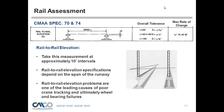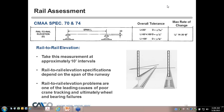Once you have the reference rail established, you then do the rail-to-rail evaluation, taking measurements at approximately every 10-foot interval. The rail-to-rail tolerance depends on the span: for spans less than 50 feet, plus or minus 3/16 inch; greater than 50 but less than 100 feet, plus or minus 1/4 inch; and greater than 100 feet, plus or minus 3/8 inch. These are surprisingly tight tolerances.